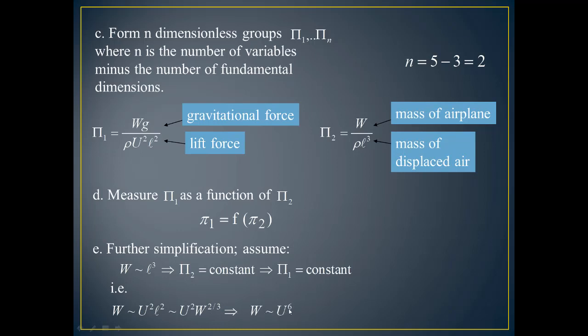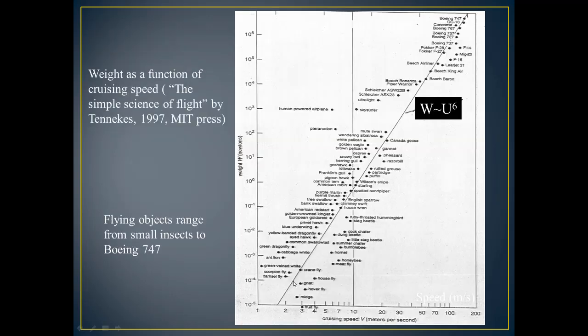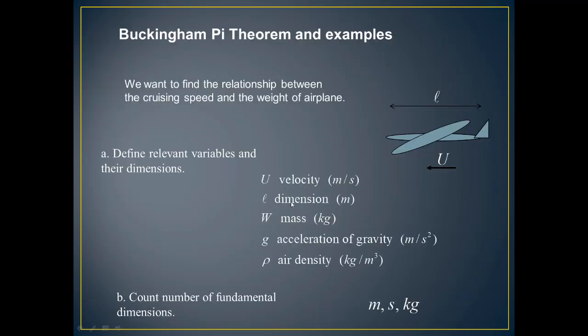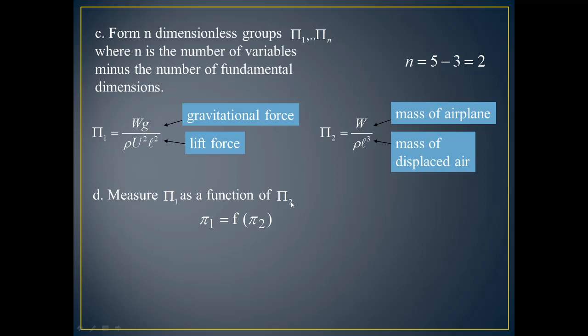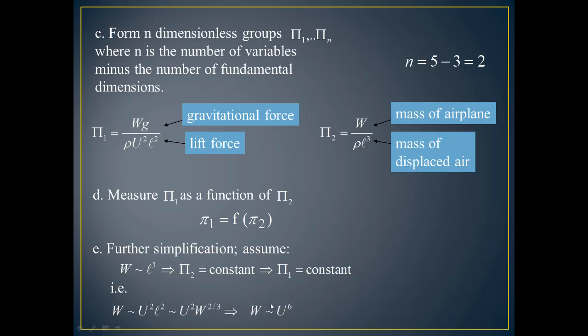Therefore W is approximately equal to U to the power 6. Through non-dimensional analysis we have reached the conclusion that W is proportional to U to the power 6. If you have so many number of variables, you can configure and determine how each is dependent on the other. That is the power of Buckingham Pi theorem.